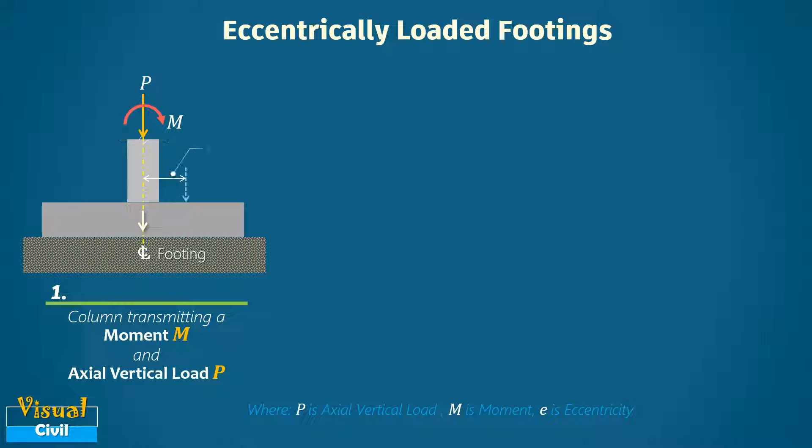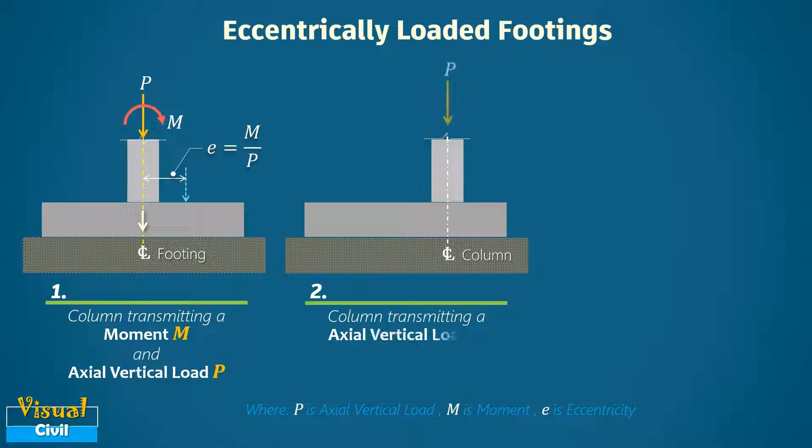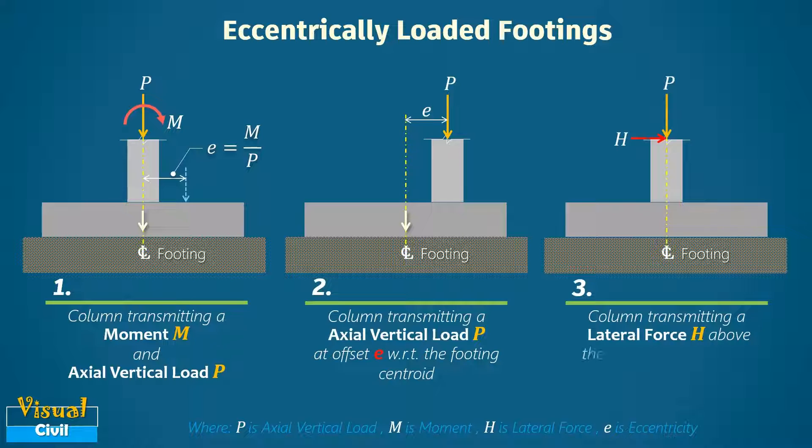Here eccentricity e is equal to moment M divided by axial load P. Second, when the column transmits a vertical load P at offset e with respect to the centroid of the footing. And third, when the column transmits a lateral force H located above the foundation level in addition to the vertical load P.